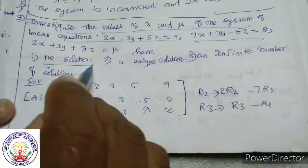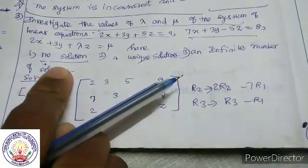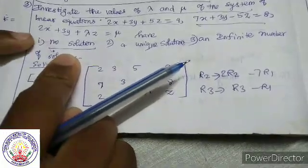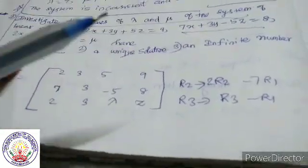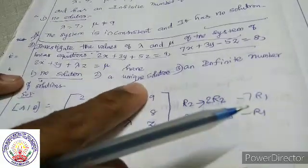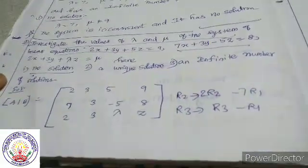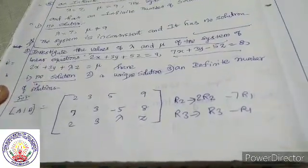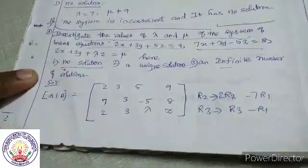The solution conditions: no solution when rank A is not equal to rank AB. Unique solution when rank A equals rank AB equals rank 3. Infinite number of solutions when rank A equals rank AB equals 2, with last row zeros.